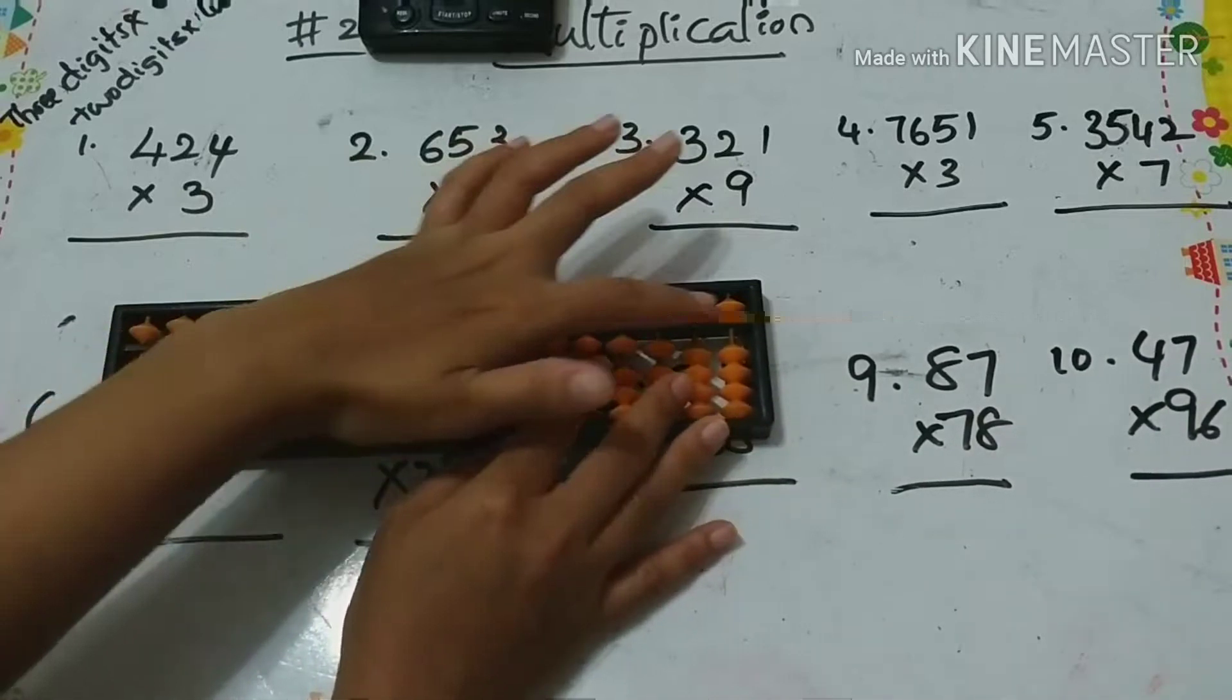The answer is 2889. Next we are doing four digit times one digit, so totally we need five columns here on our abacus. We will start from fifth column.